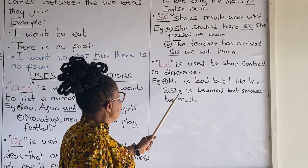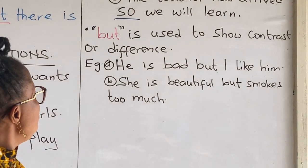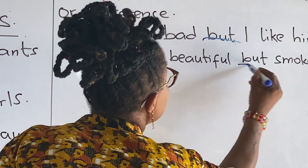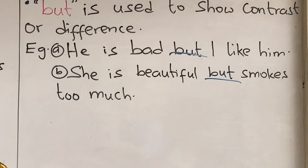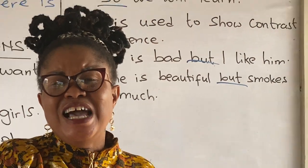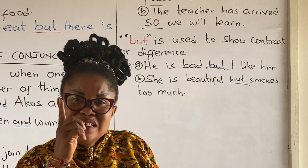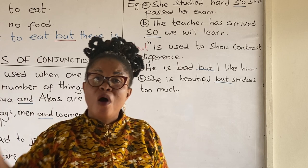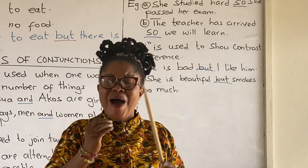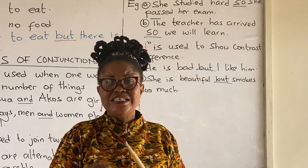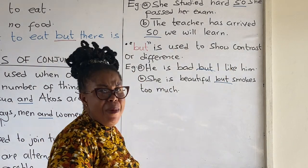Let's look at example two: She is beautiful, but smokes too much. The contrast here is: she is beautiful, but even though she is beautiful, she smokes too much. You have two differences here. So as soon as 'but' is used in a sentence, it shows contrast or differences.